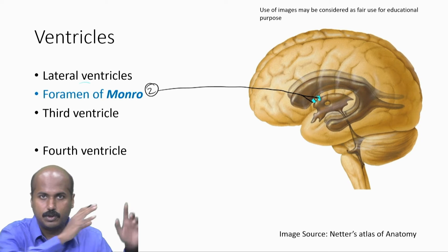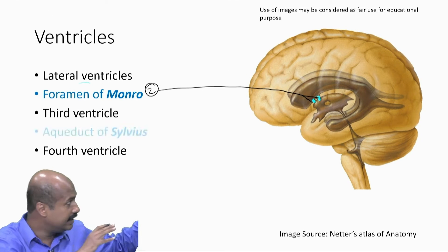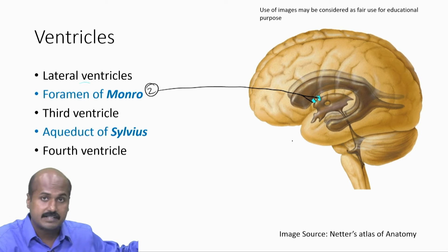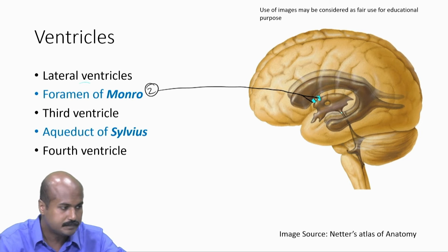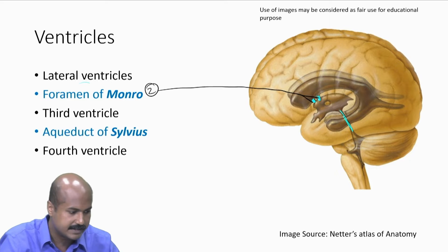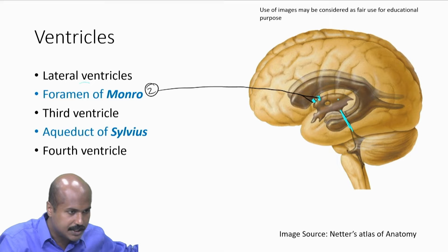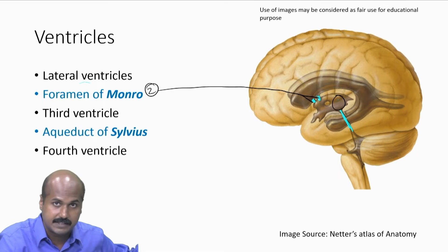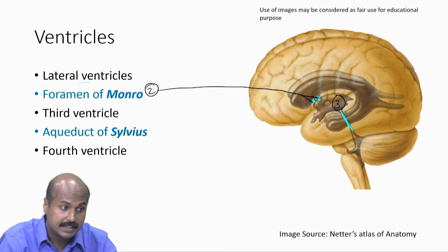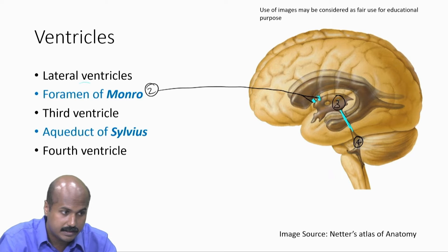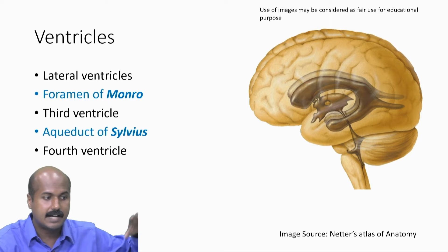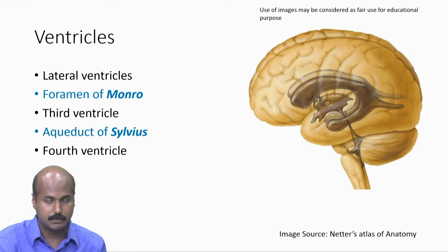The third ventricle, located in the diencephalon, communicates with the fourth ventricle through the aqueduct of Sylvius. This long tube is called the aqueduct of Sylvius, connecting the third ventricle to the fourth ventricle. That is how the ventricular system communicates with each other.